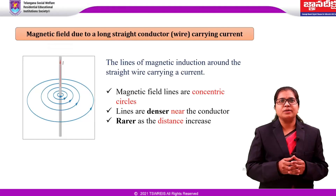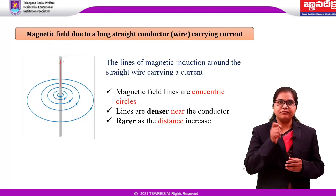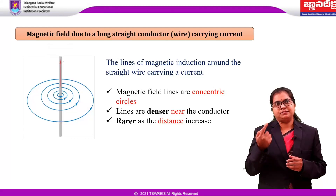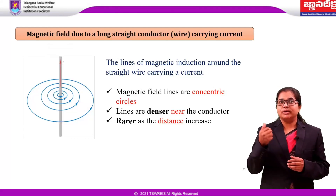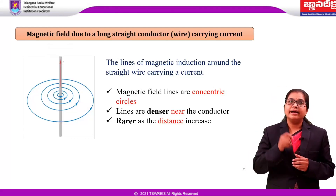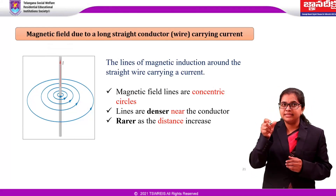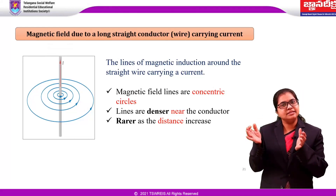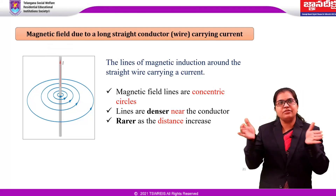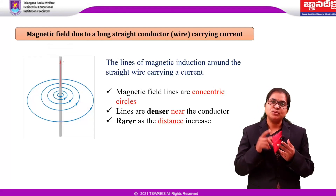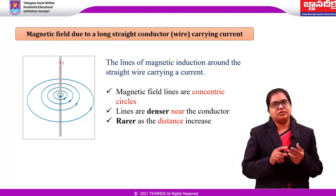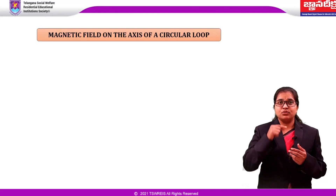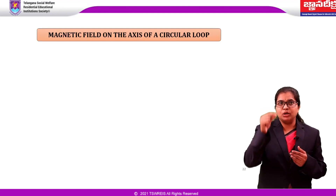This is a very important formula when solving problems. We can see the lines of magnetic induction around the straight wire carrying the current. The observations from the diagram: magnetic field lines are concentric circles. Lines are denser near the conductor, and as the distance increases they become less dense. Now, coming to the second application: magnetic field on the axis of a circular loop.